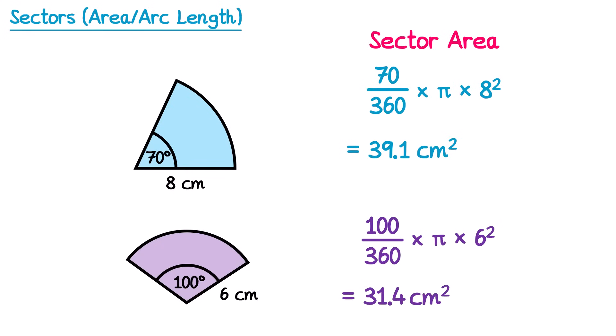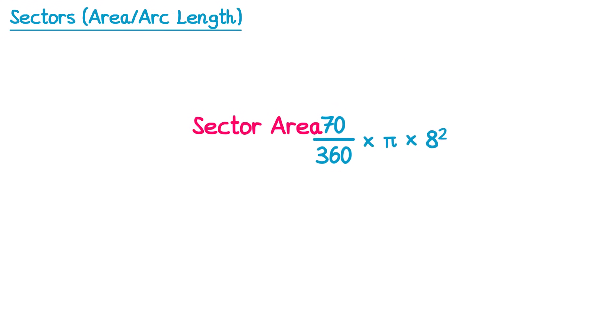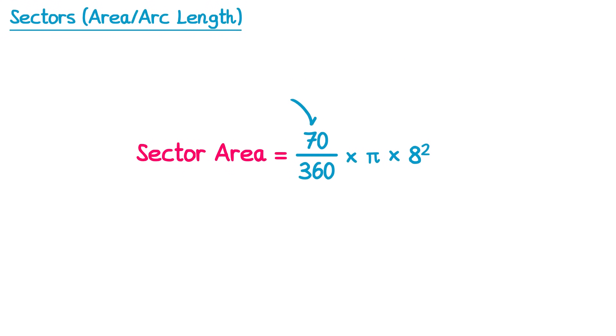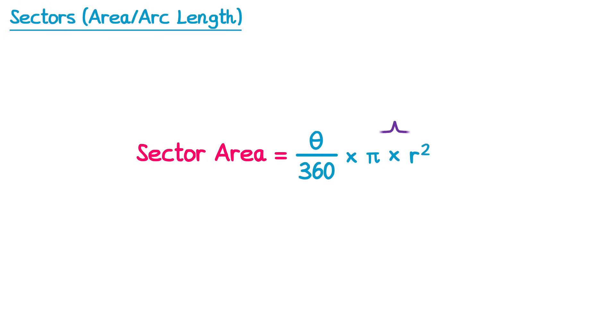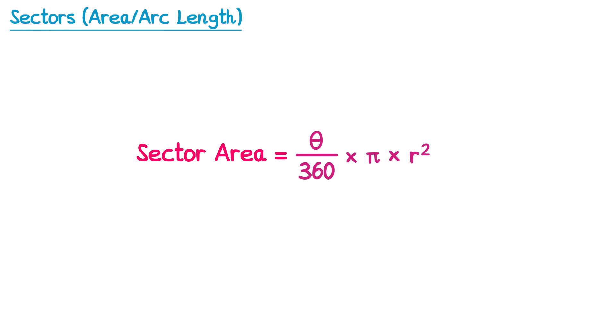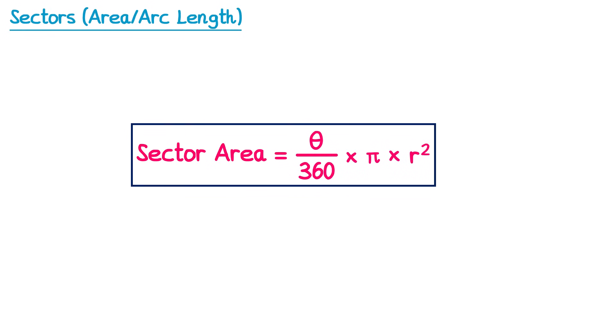We're now ready to write down a more general formula for the area of a sector. The angle for the sector we represent with the symbol theta, and for the radius we use the letter r. Notice how this part is just the area of the circle formula, and we're multiplying it by the angle theta over 360. So more generally, the sector area formula is theta over 360 times pi times r squared.